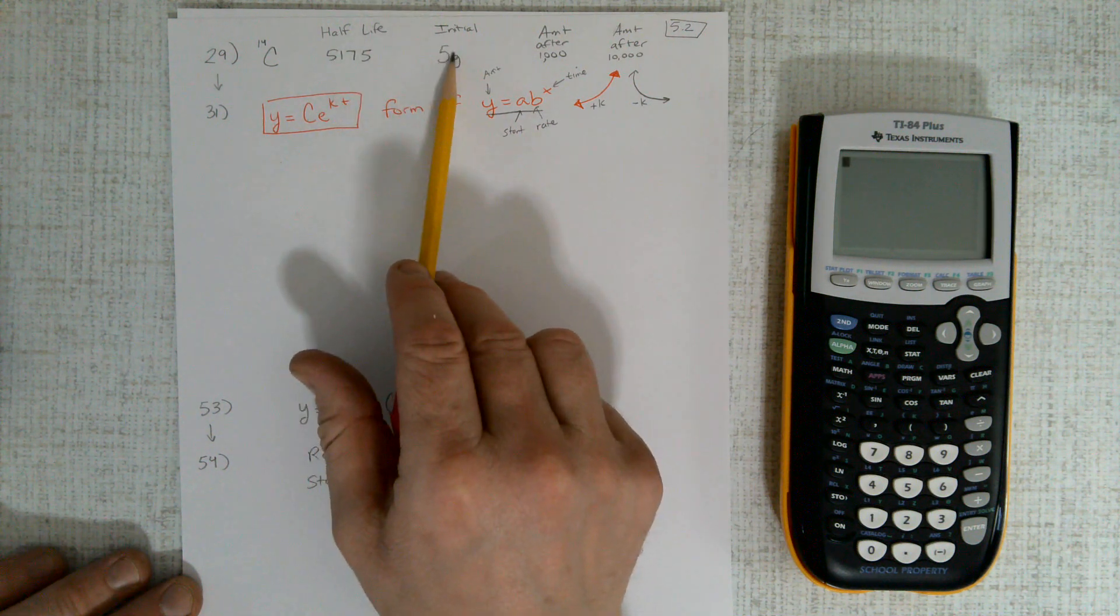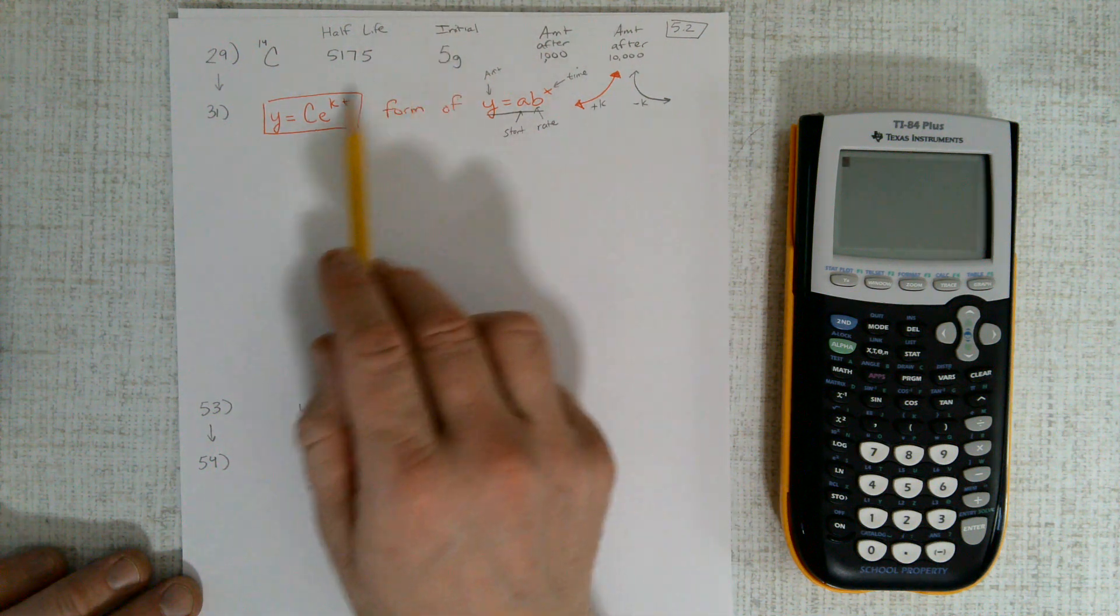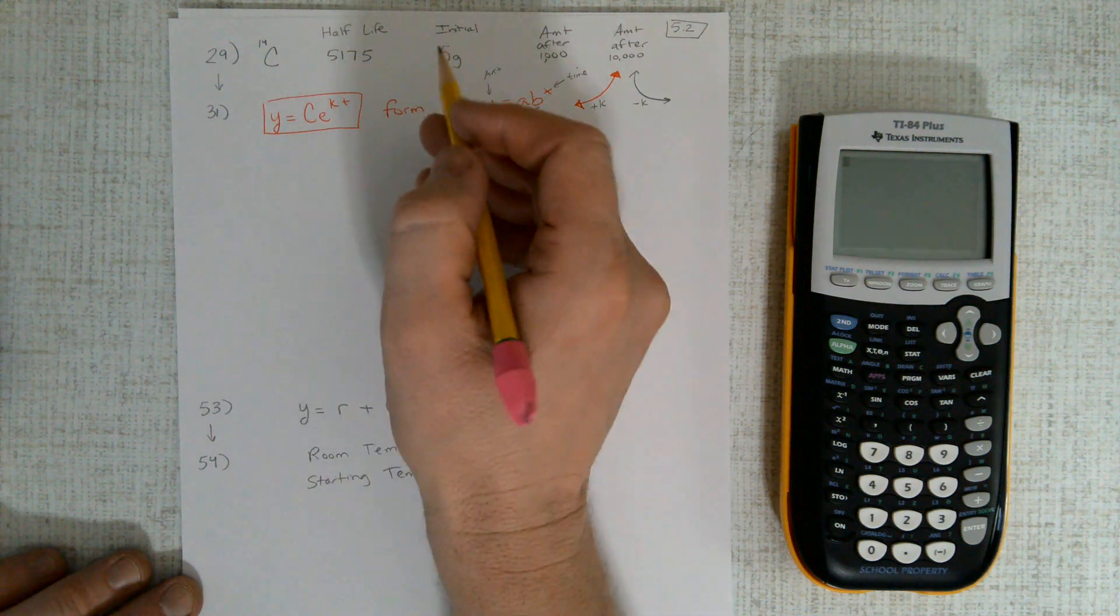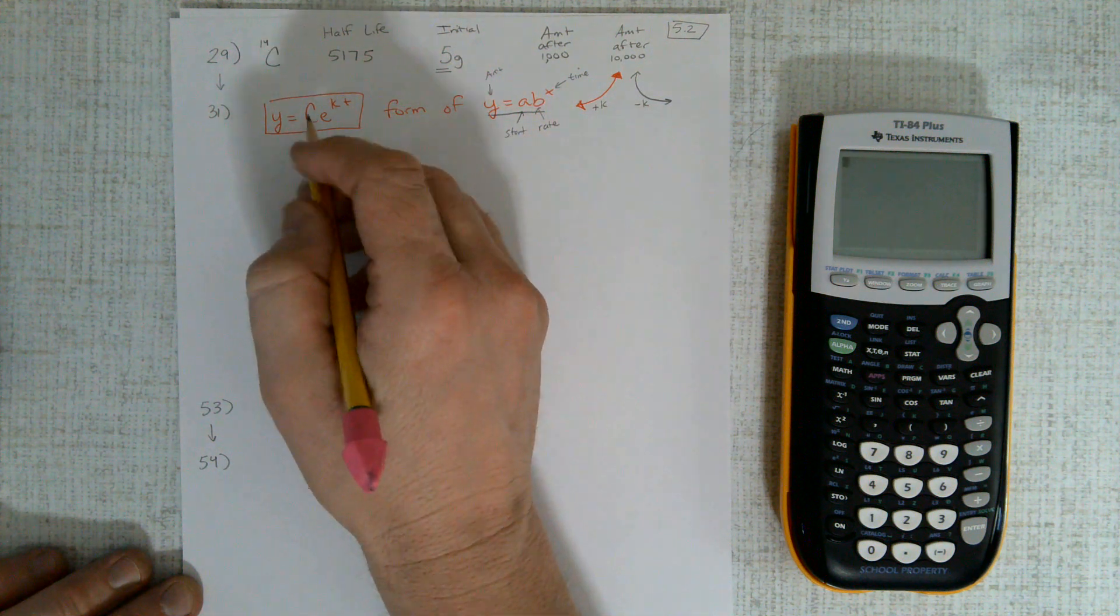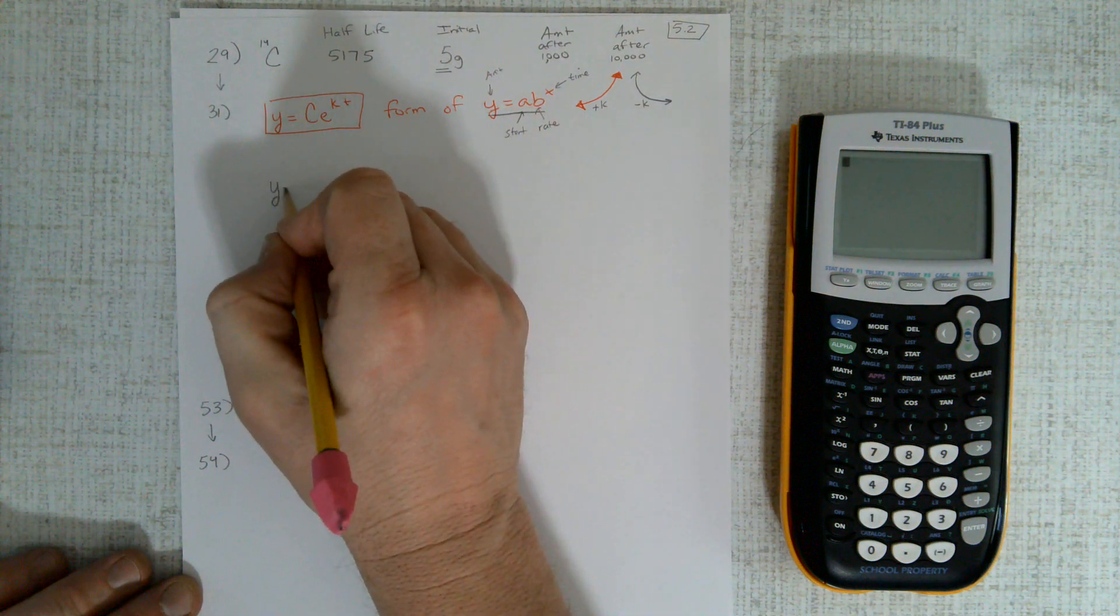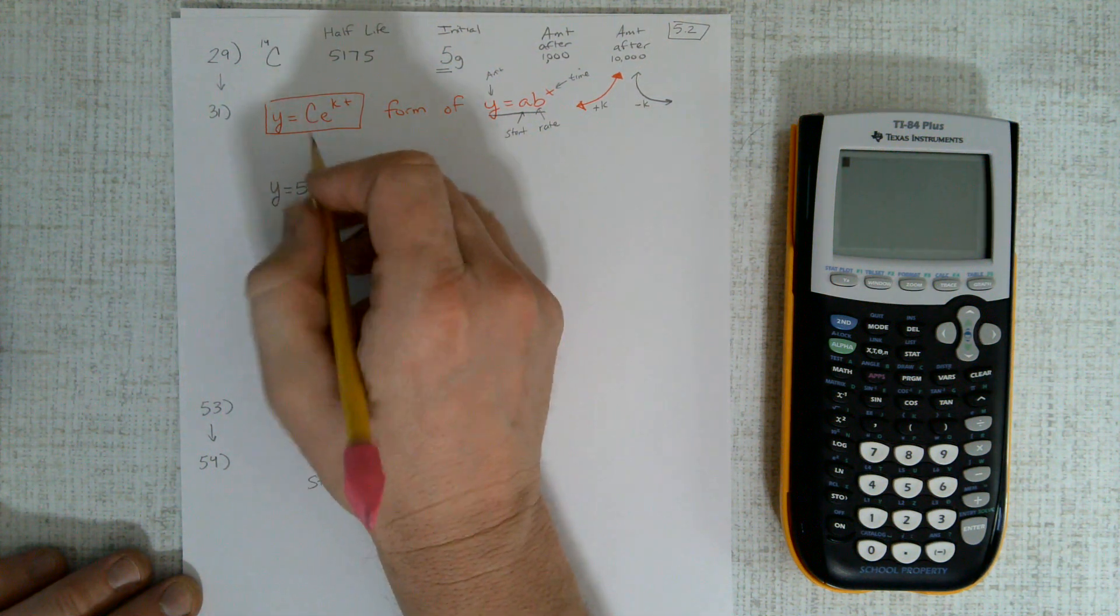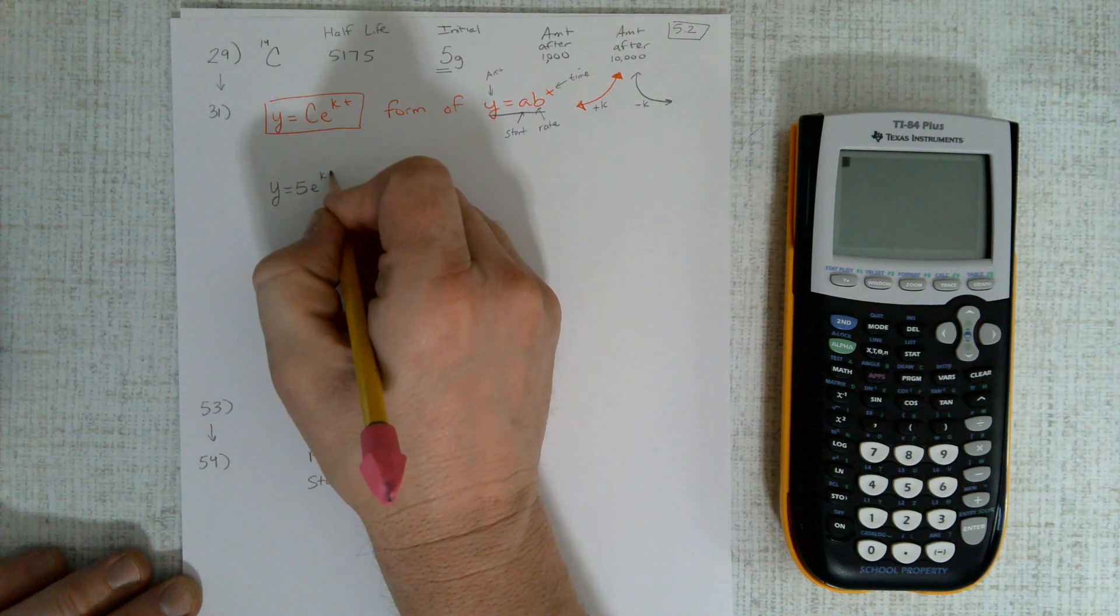It starts at 5. We need to take this information and put it into this equation. Right here is the starting value, so that goes where the c is. So y equals 5e to the kt.